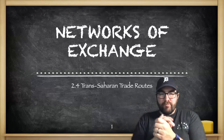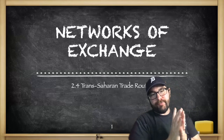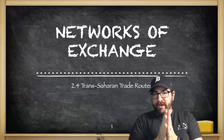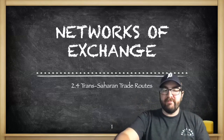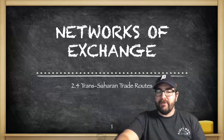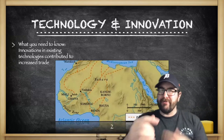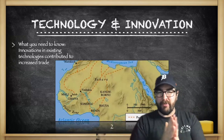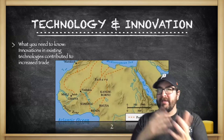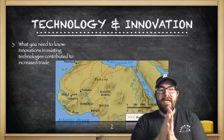Now we're going to take our run through the last of the three major trade networks of this 1200 to 1450 time period, and that's the Trans-Saharan Trade Routes, or sometimes referred to as the Sand Roads, as opposed to the Silk Roads up in Asia.